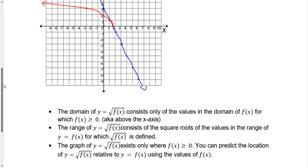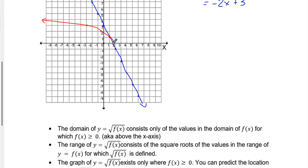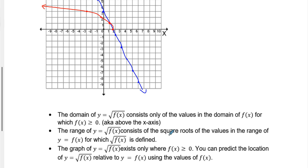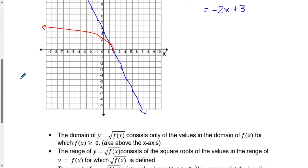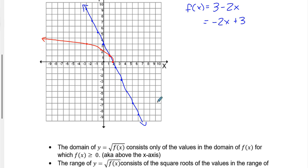Let's identify a few things about our domain and range. The domain of our radical graph only includes values for which the y-value of f(x) is greater than or equal to 0 — basically above the x-axis. For this negative-slope line with y-intercept 1.5, our graph can only exist when x is less than or equal to 1.5. The range consists of the square root of the values in the range for which it's defined. The graph of y equals the square root of f(x) exists only when our y-values are greater than 0.